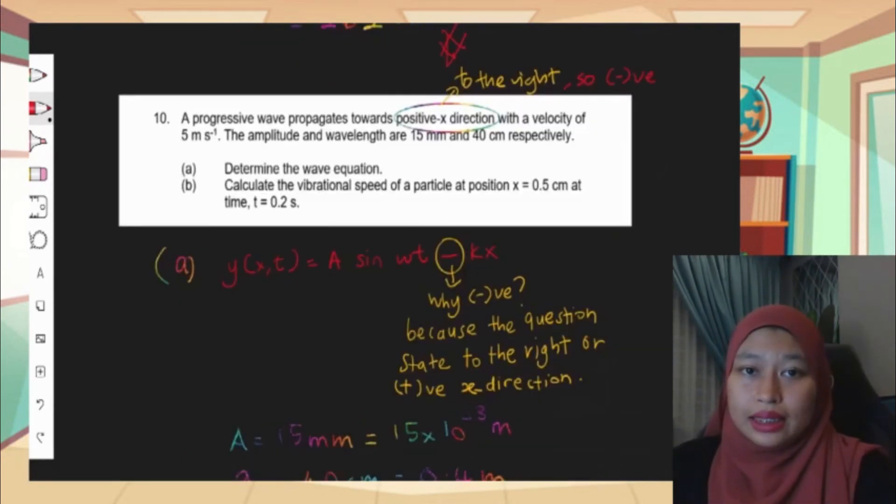Last but not least, number 10. A progressive wave propagates towards positive x direction with a velocity of 5 meter per second. The amplitude and wavelength are 15 millimeter and 40 cm respectively. 10a: determine the wave equation. Basically we'll just answer 10a because 10b is out of syllabus. So we're not going to discuss 10b. As the previous question, we need to know the general equation of the wave before we can write the wave equation.